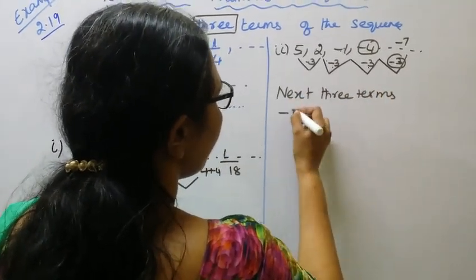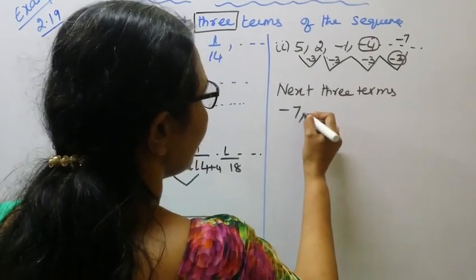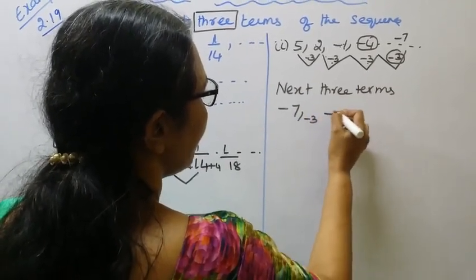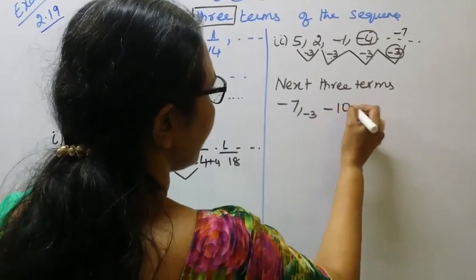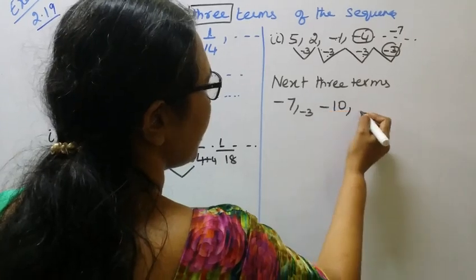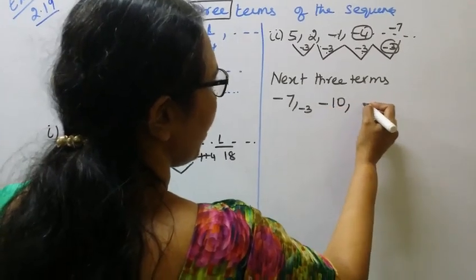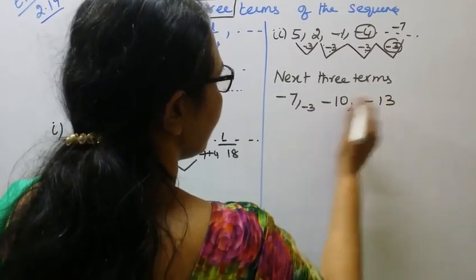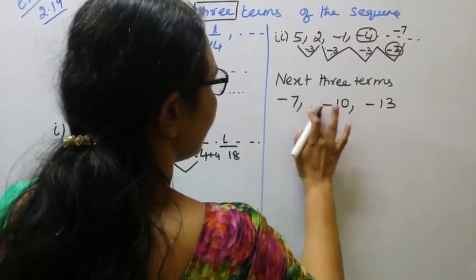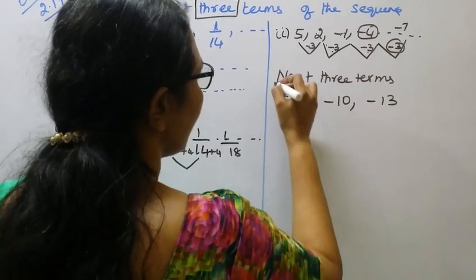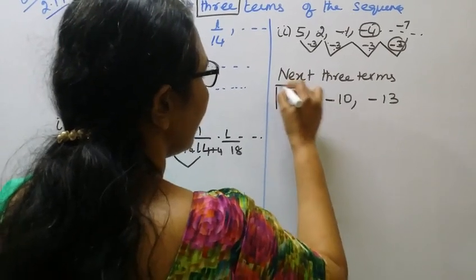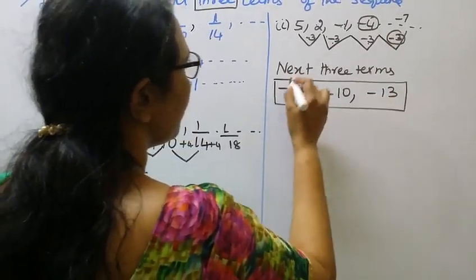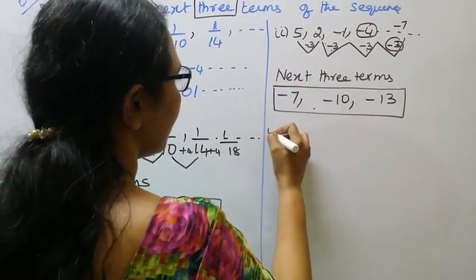Minus 7, then minus 7 minus 3 is minus 10, then minus 10 minus 3 is minus 13. That is the answer for second subdivision.